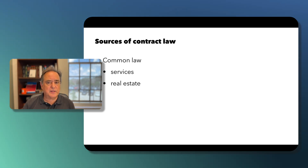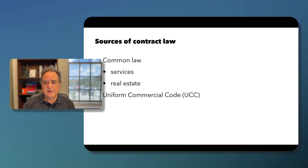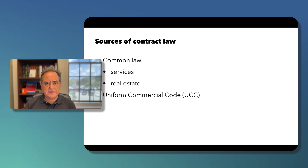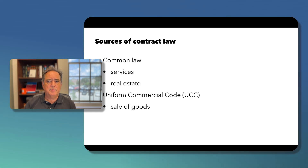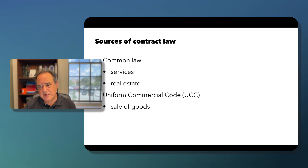Real property is generally anything that is land or permanently attached to the land, like a house or a building. Another source of contract law is the Uniform Commercial Code. The UCC is more of a model law that virtually every state has adopted in whole or in part. It generally governs the sale of goods — tangible, movable objects — and we are subject to the UCC contracting system for those.